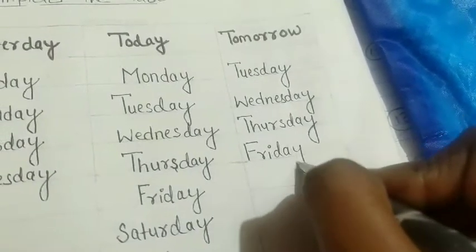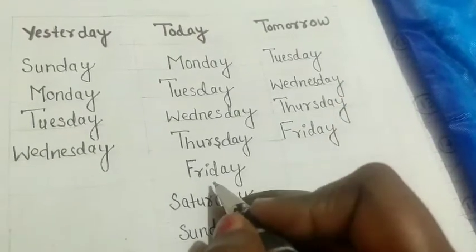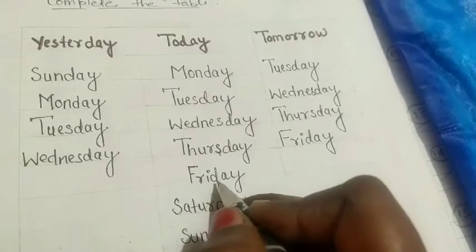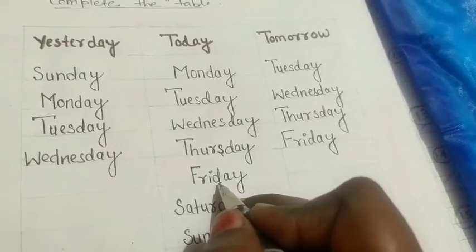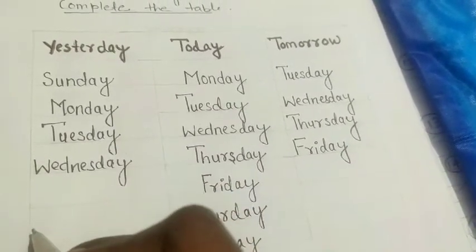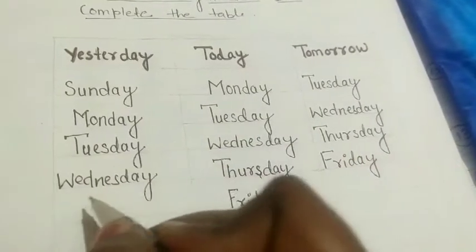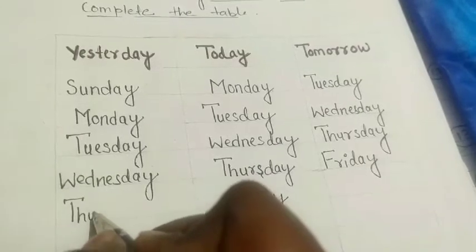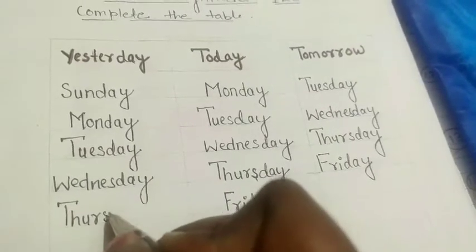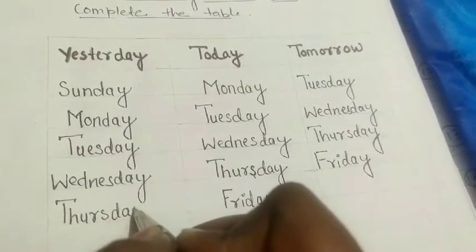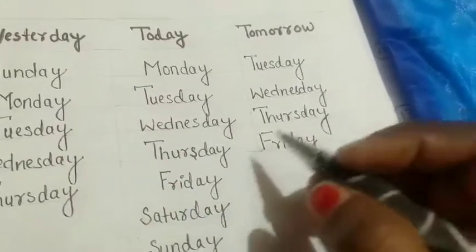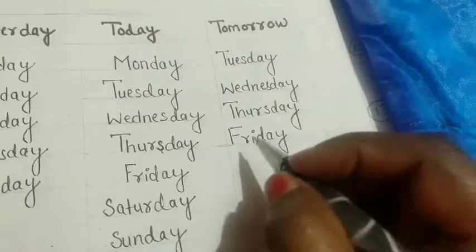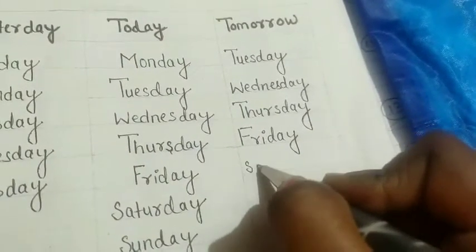Tomorrow will be Friday. Next, today is Friday so yesterday was Thursday. Write it here: Thursday. Today is Friday so tomorrow will be Saturday. Write it here: Saturday.